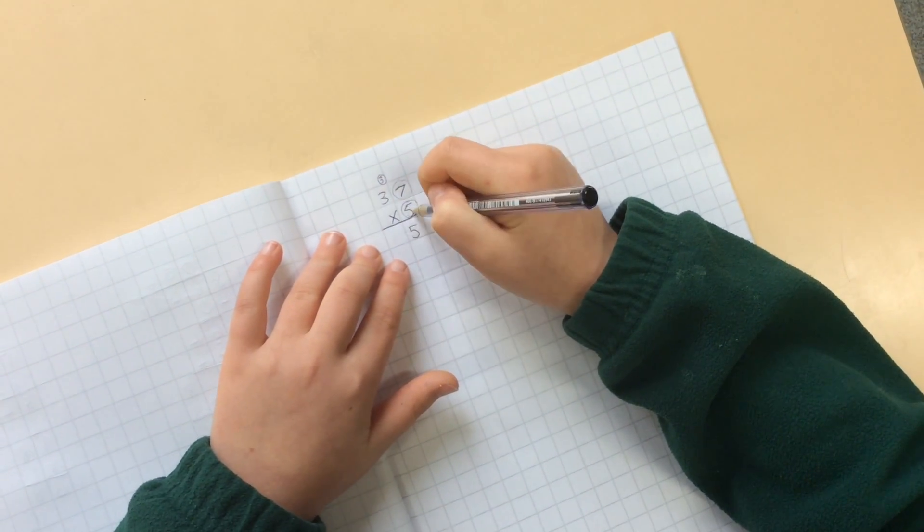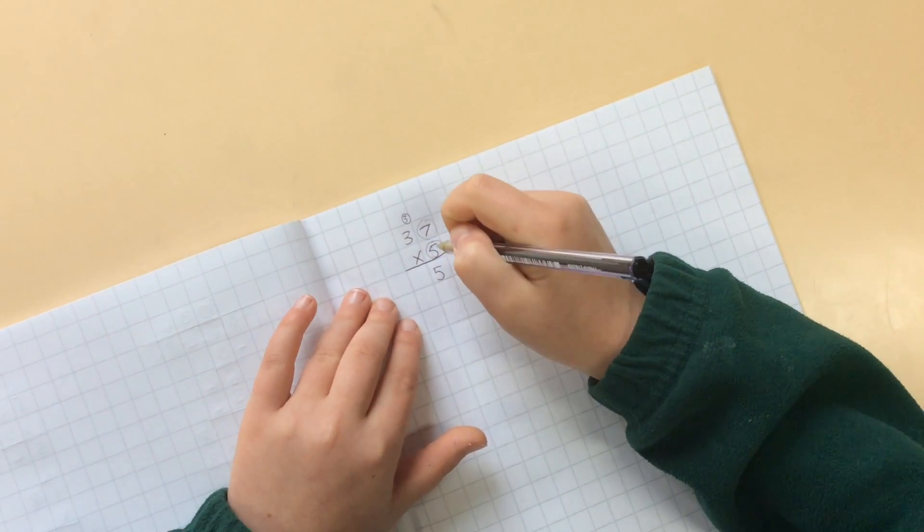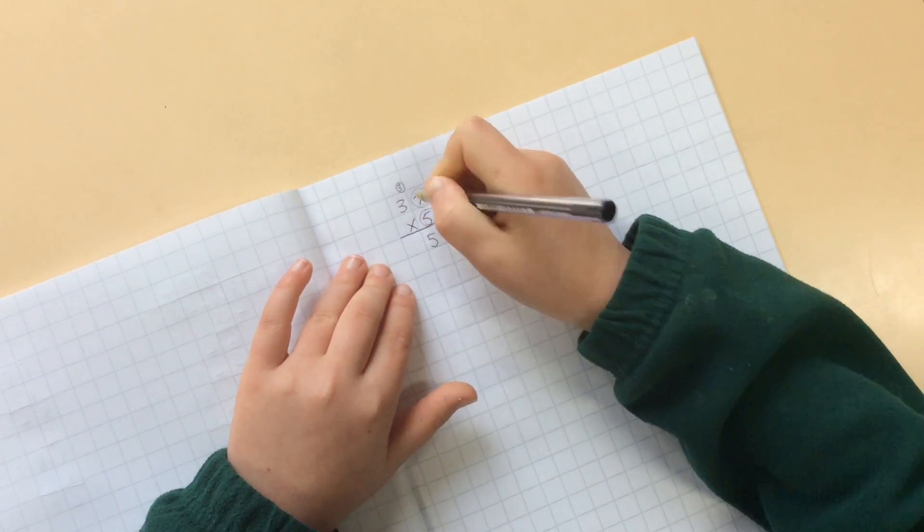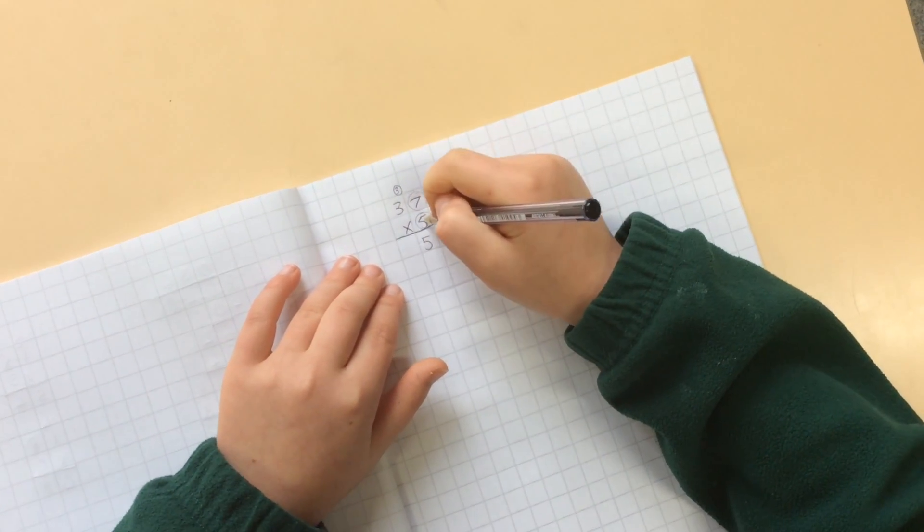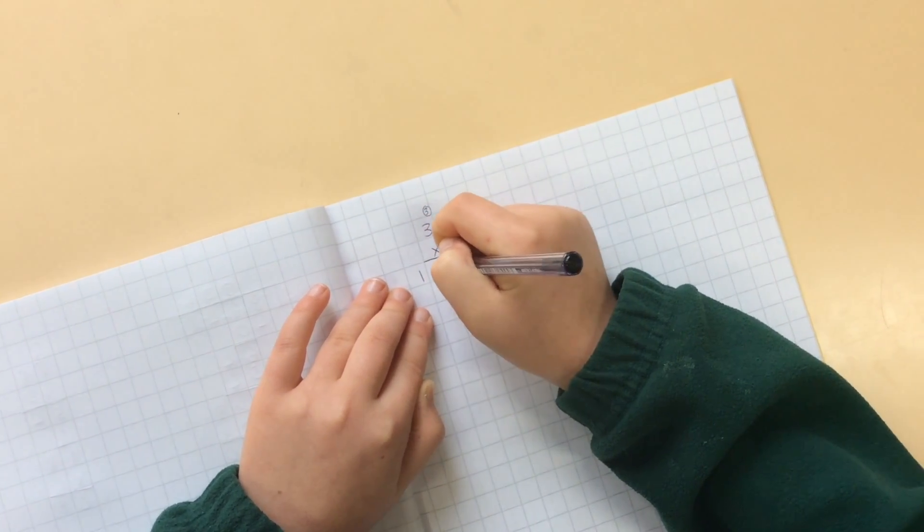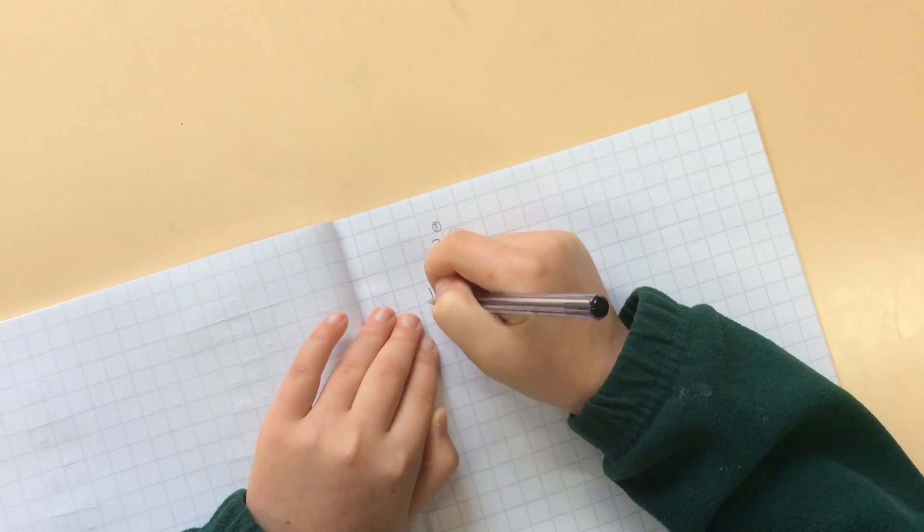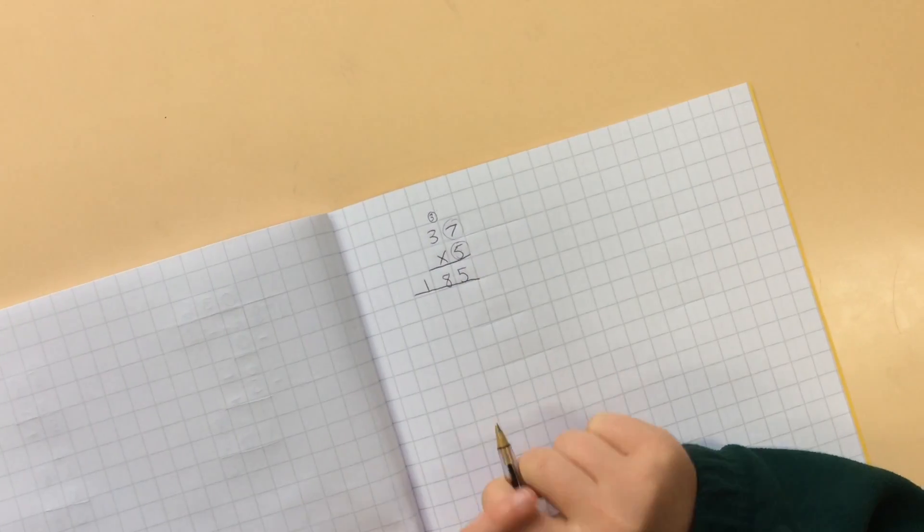And then I'm going to move on to 5 units times 3 tens, which is 15 or 15 tens. I'm now going to add on my 3 tens from 5 times 7, and that will give me 18 tens. So I'm going to write it down there. And so that gives you the answer of 185.